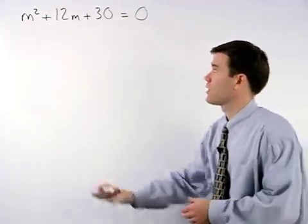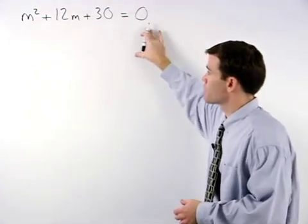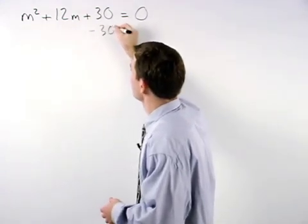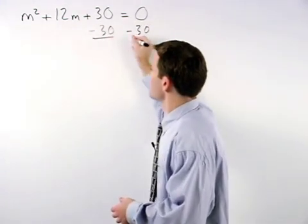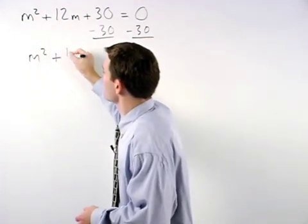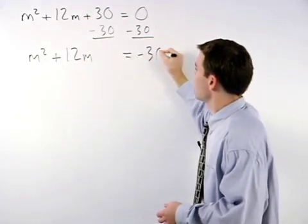In order to create a perfect square trinomial on the left side, we would first move this plus 30 over to the right by subtracting 30 from both sides of the equation, and we have m squared plus 12m equals negative 30.